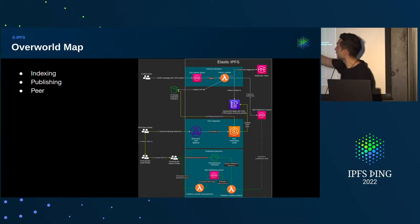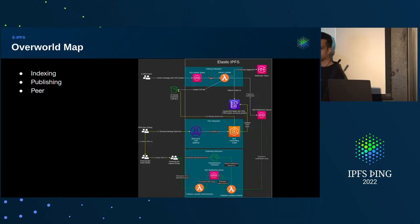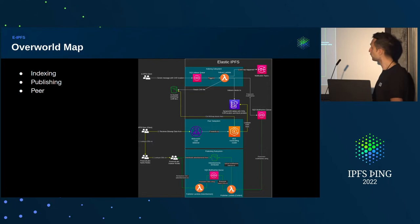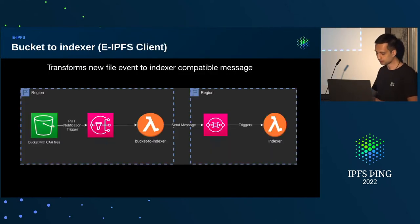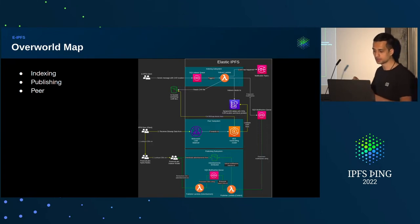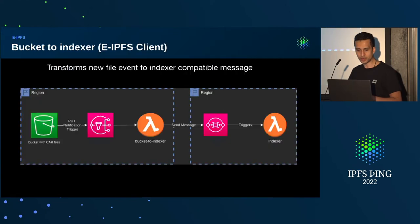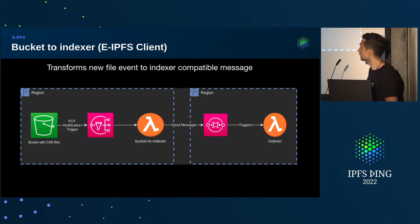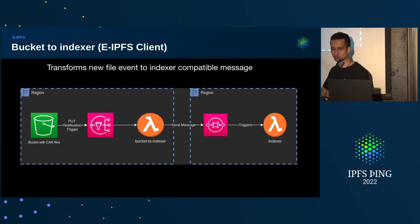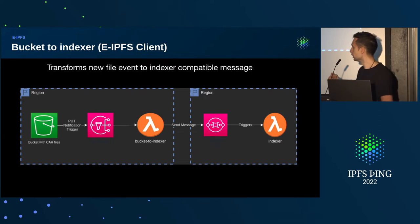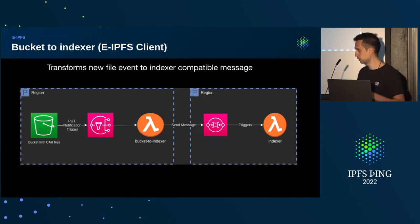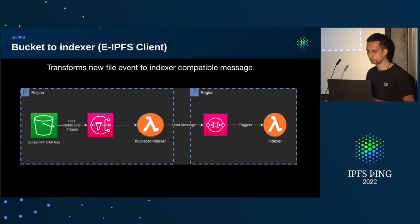It all starts with a client that sends a message to the indexer queue, and that message just says what is the location of the car file that's supposed to be indexed. This client can be any component or application that has access to send that message to the queue. The client we use in the Web3 Storage and NFT Storage project is the bucket-to-indexer one, which is a lambda that receives an event whenever there is a new car file inside the bucket, and then transforms that AWS event JSON into a simpler message that the indexer can process.